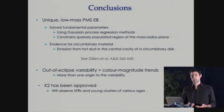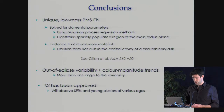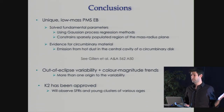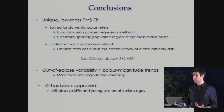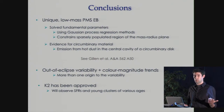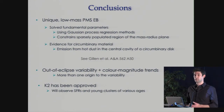Looking to the future: K2 has been approved and will observe a number of star-forming regions over the next couple of years, which will hopefully help us find more pre-main sequence eclipsing binaries and constrain the mass-radius relation at early periods. We could also potentially find planets around young stars, which would be very interesting for both star and planet formation scenarios.